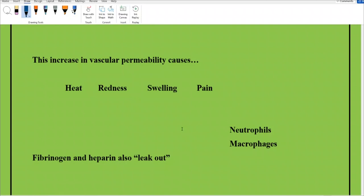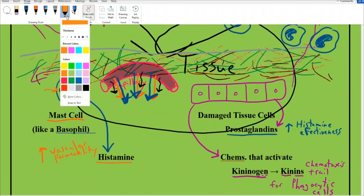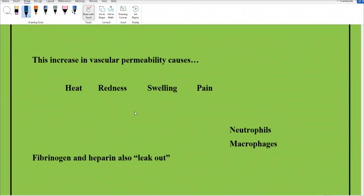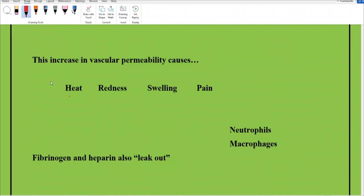This increase in vascular permeability causes fluid to leak out all over, and that's what causes heat, redness, swelling, and pain. Heat from lots of metabolism going on, lots of cells moving around. Redness, swelling, and pain. The four cardinal signs of inflammation.